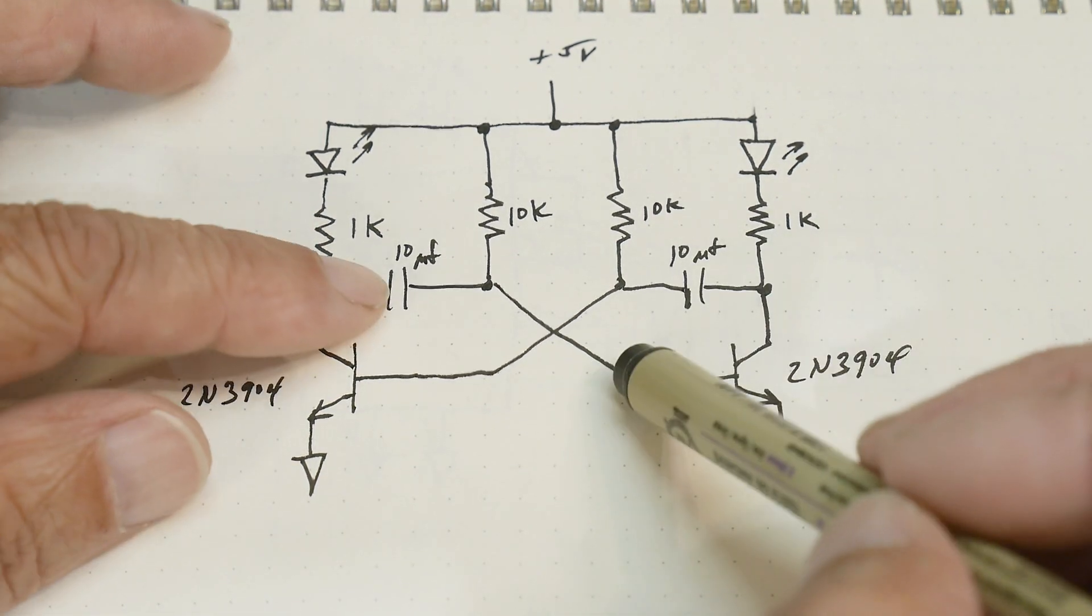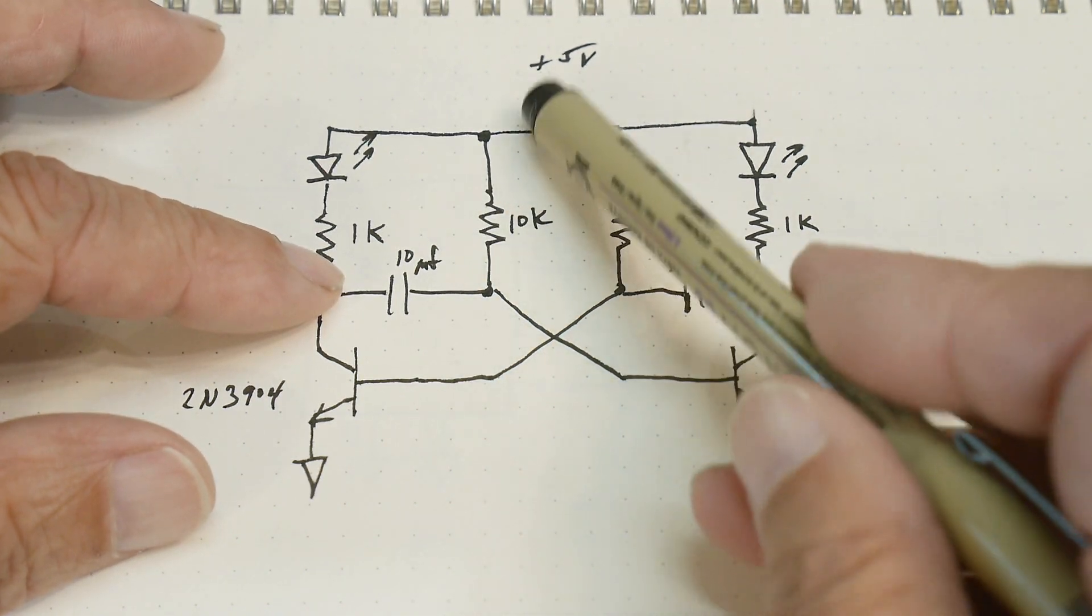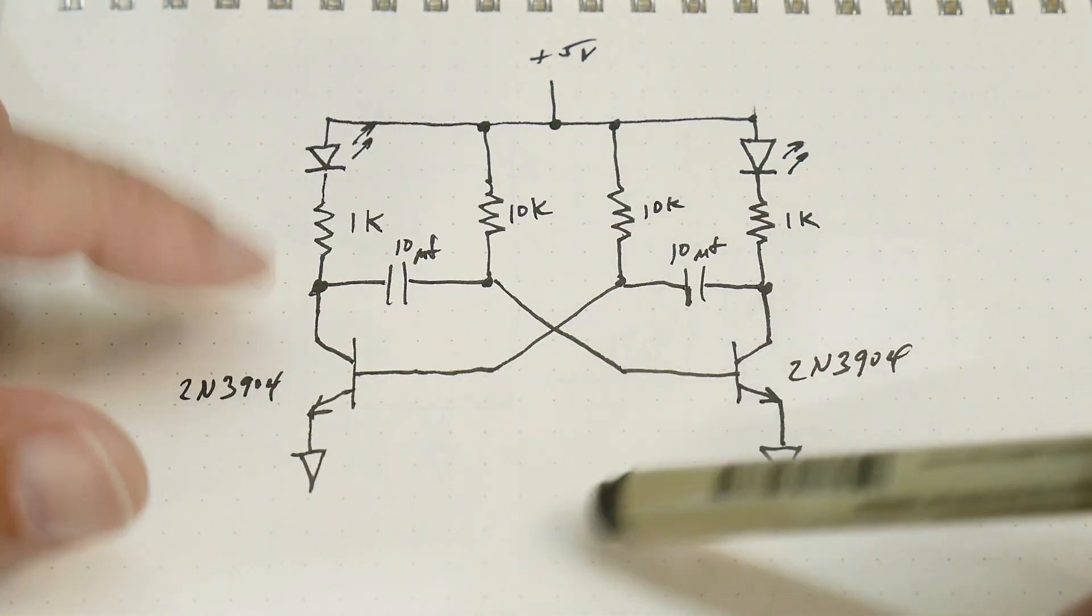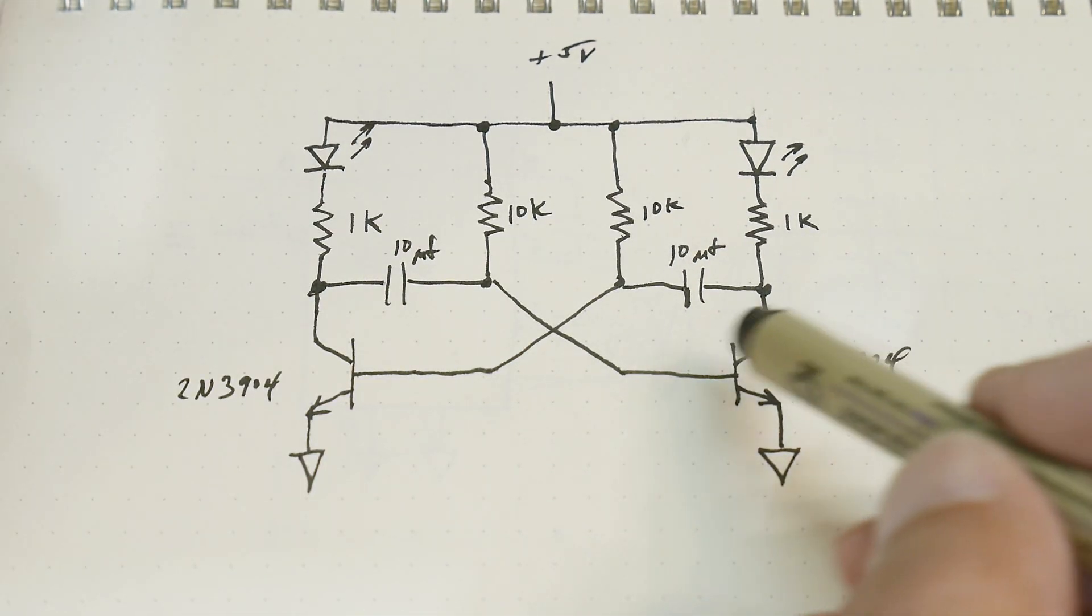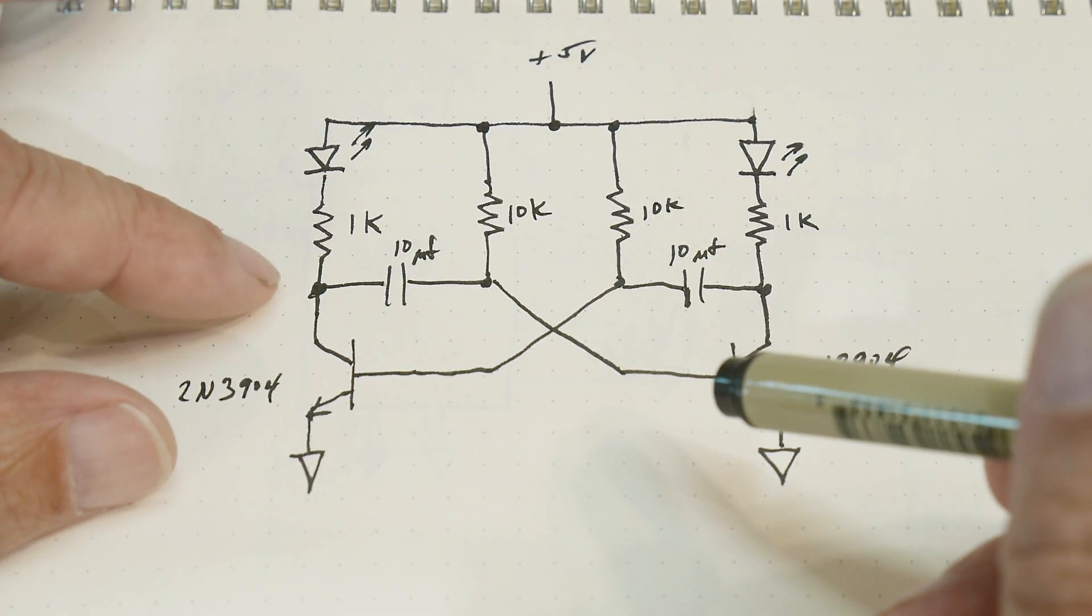So where does that minus 2.5 volts come from? Well, 10kΩ resistor to plus 5V. Here's some grounds. I don't see any negative voltages anywhere. Where does it get a negative voltage?